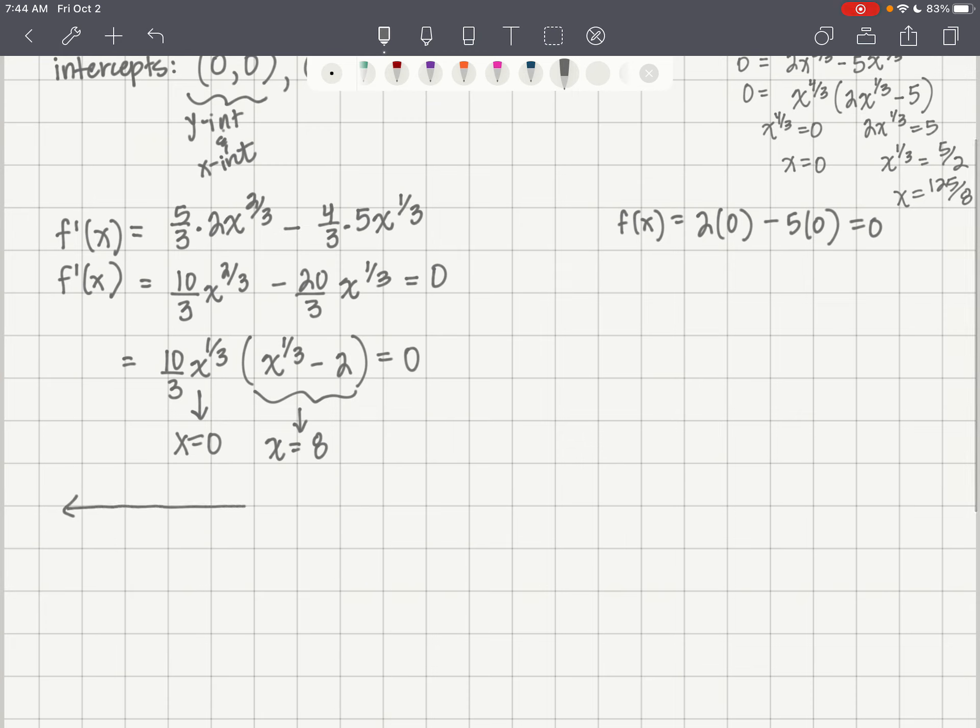So we'll make our number line. We've got 0, we've got 8. This would be a good place for you to pause and see if you can test your intervals properly to see whether or not they're increasing or decreasing. I'm going to provide the answers here. So I found that we were increasing in this interval, we're decreasing in this second interval, and then we're increasing again in this third interval.